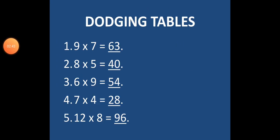Let's revise some dodging tables. Number 1, 9 multiplied by 7. Answer is 63. 9 7's are 63. Number 2, 8 into 5. 8 5's are 40.